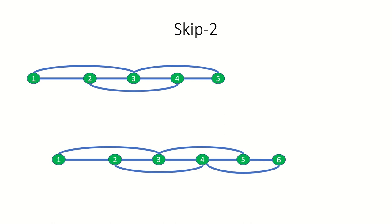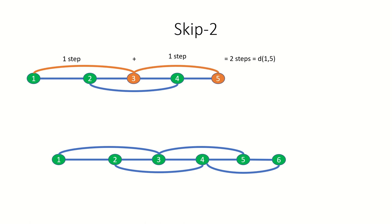How about for skip 2 graphs? What's the distance between the first and last vertex of a skip 2 graph with 5 vertices? Well the distance is just 2 in this case as we skip 2 to 3 and skip 2 to the fifth and final vertex. What about a skip 2 graph with 6 vertices?